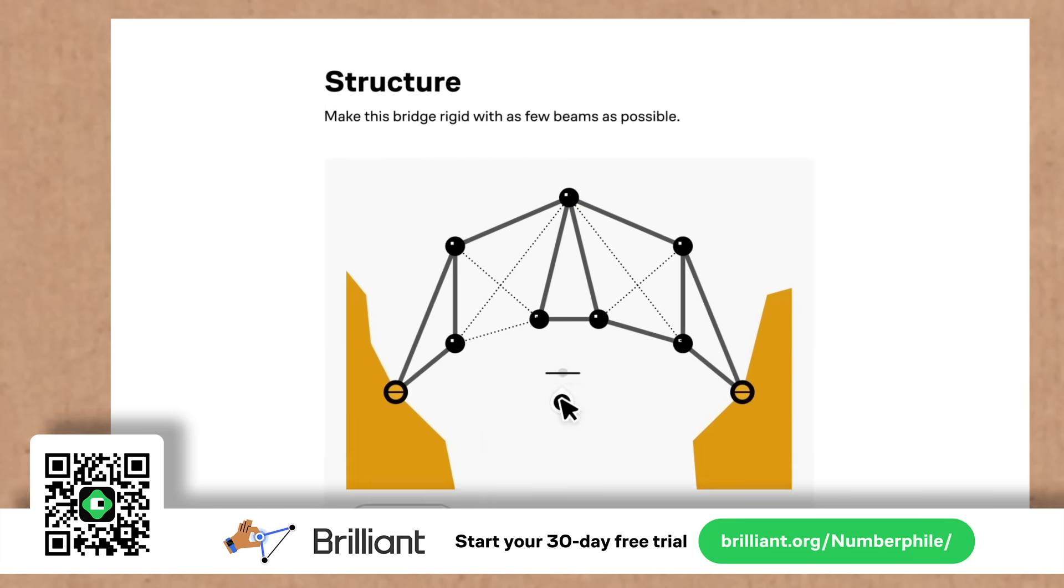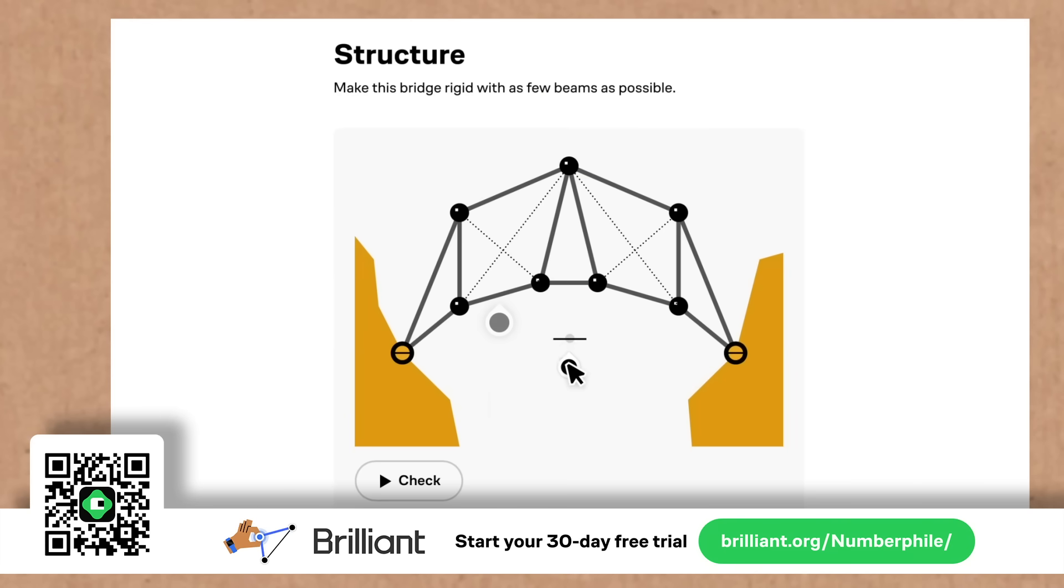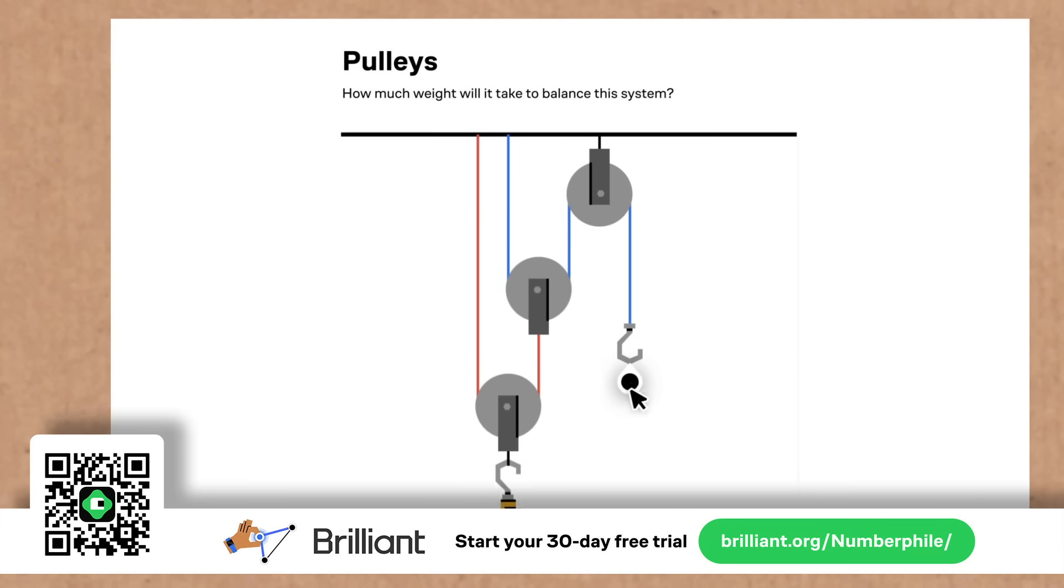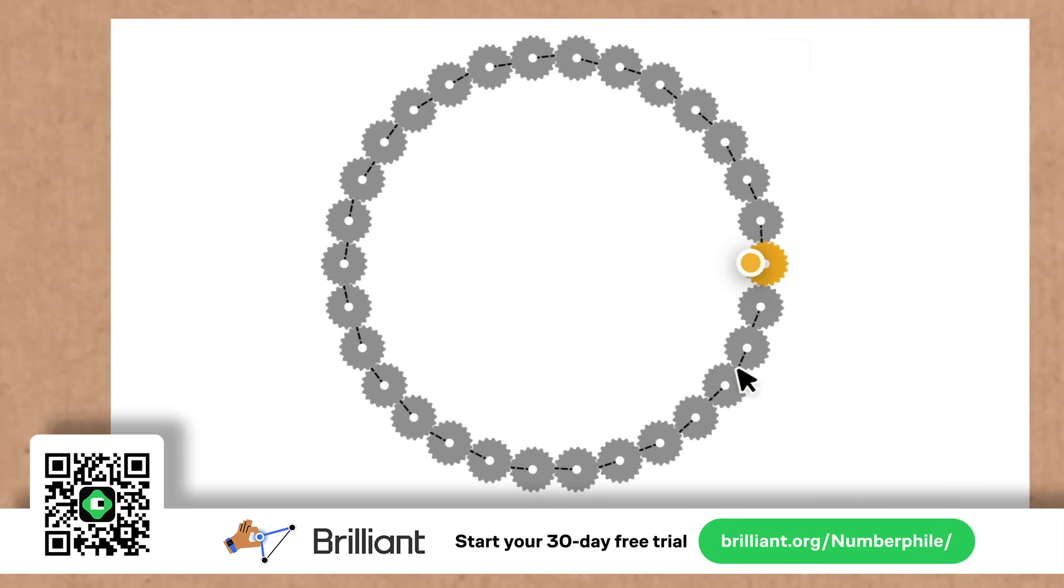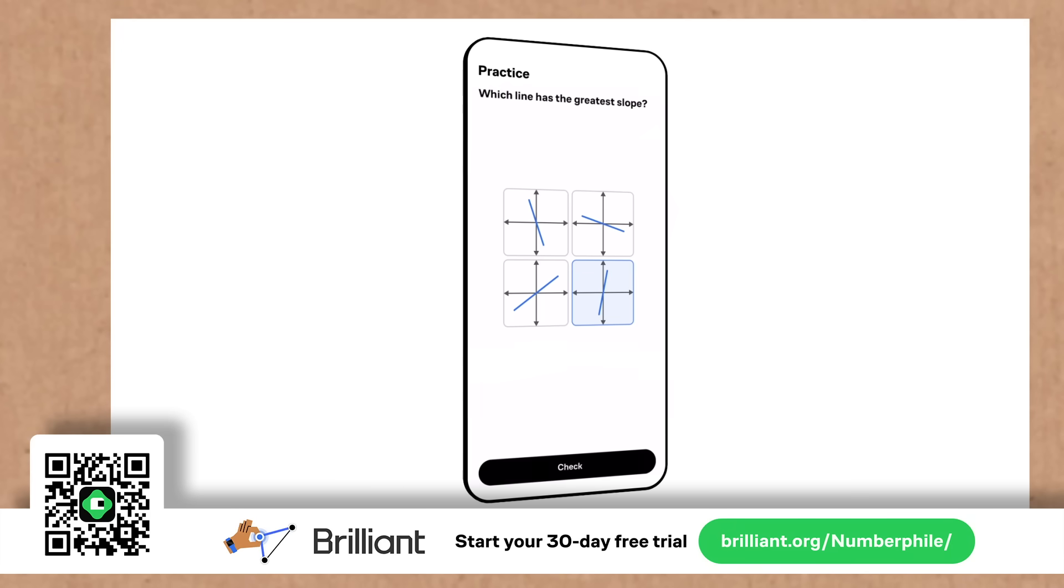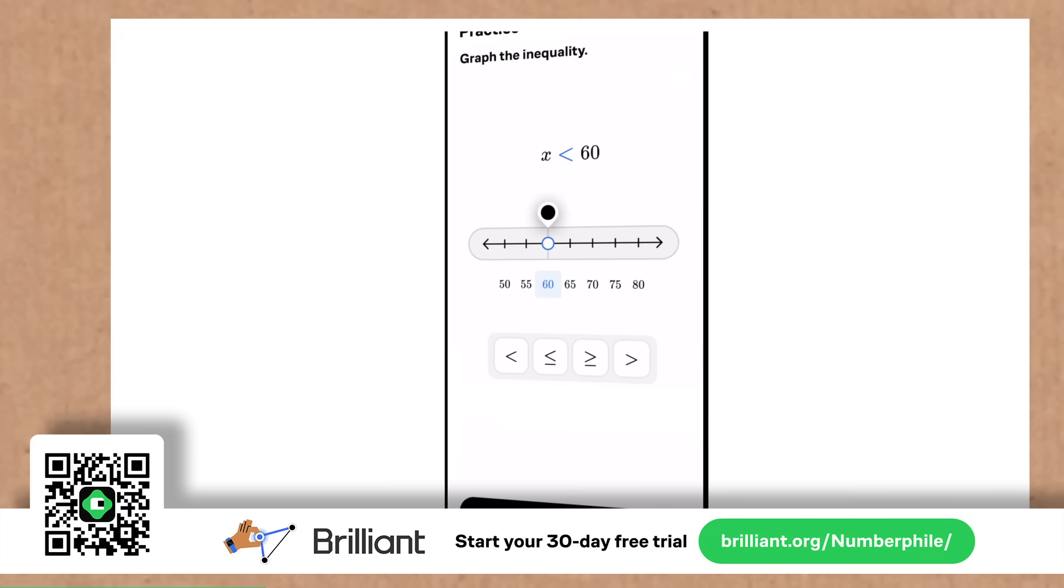Now look, I'm glad you watch videos like Numberphile, but these lessons where you interact with the content, I mean, they're hard to beat. To try everything Brilliant has to offer for free for a full 30 days, go to brilliant.org slash Numberphile or scan the QR code on the screen. And of course, I'll pop the link in the description too. That link's also going to get you 20% off an annual premium subscription.